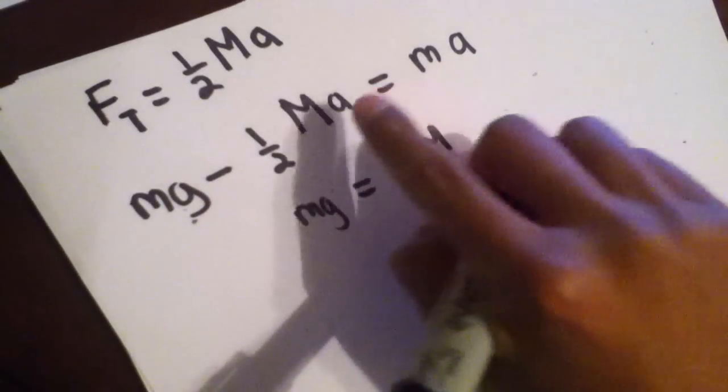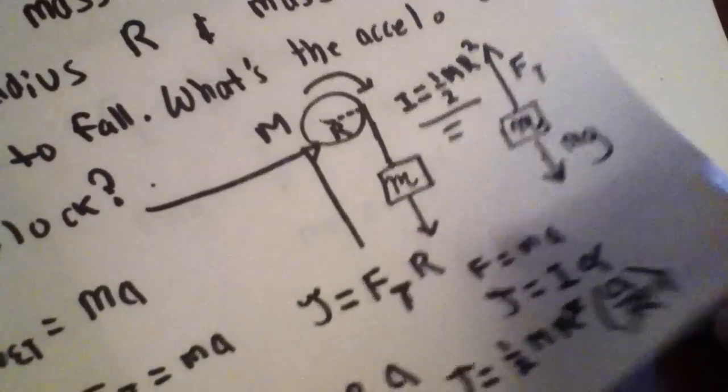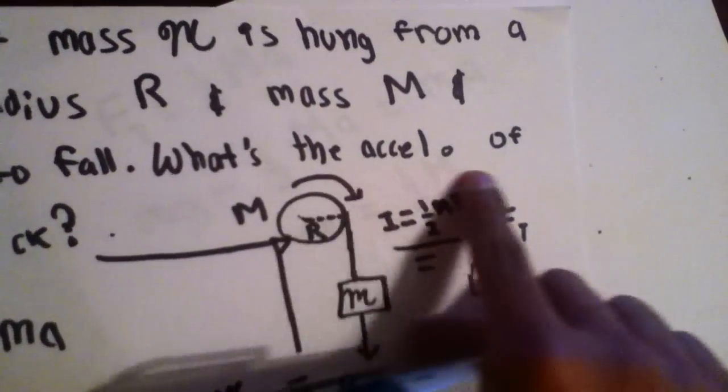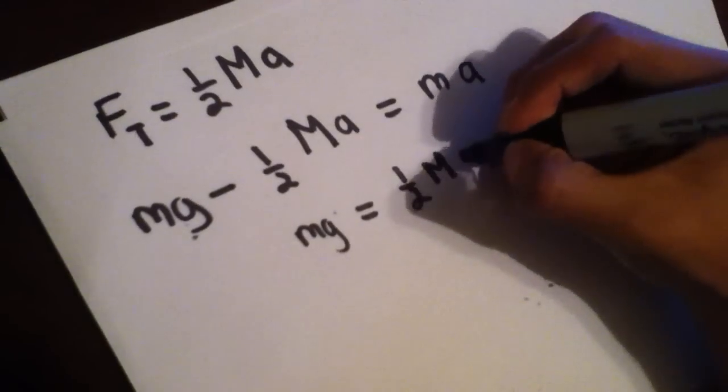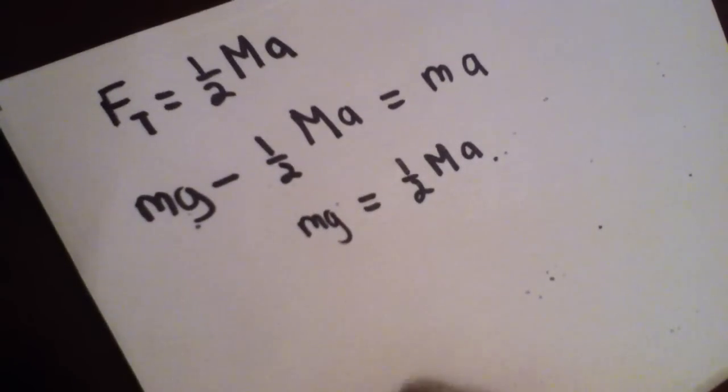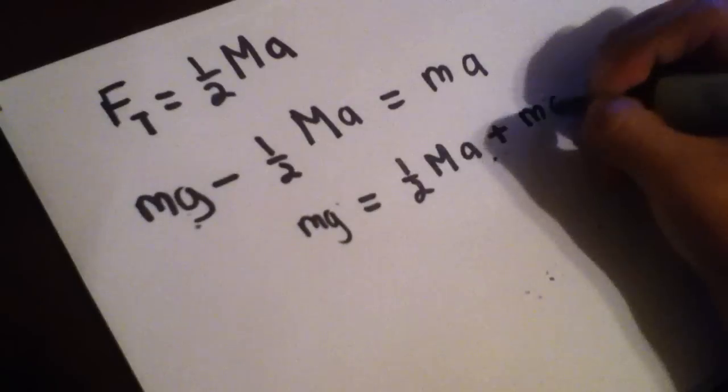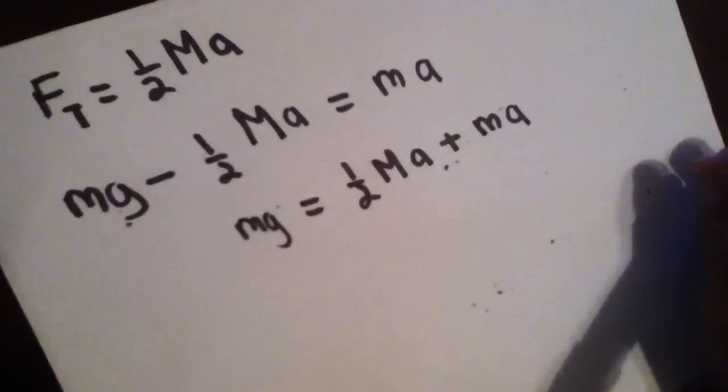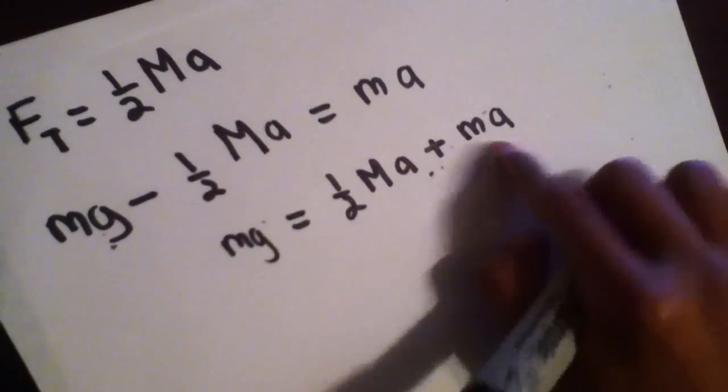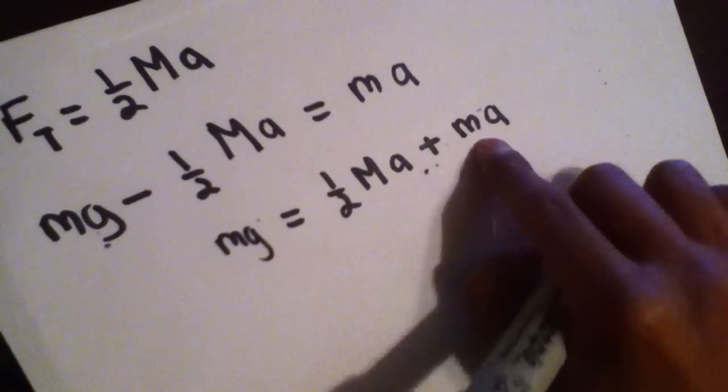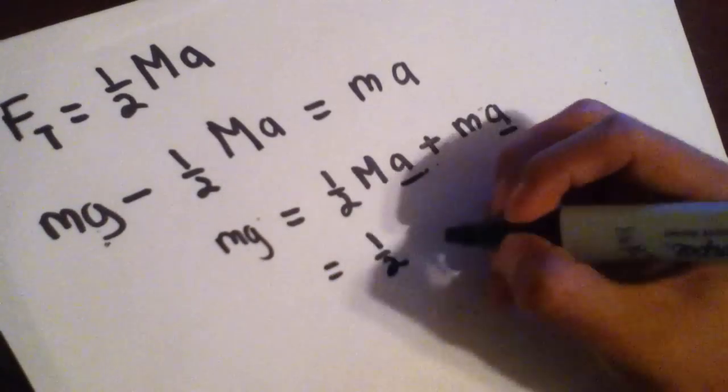Because remember, our objective is to solve for A, the acceleration of the block. One-half Ma plus Ma. And one thing, even though you can't add these, because they're not the same, they don't have the same M. You can factor out an M, an A. You can factor out this term. So then you would get one-half.